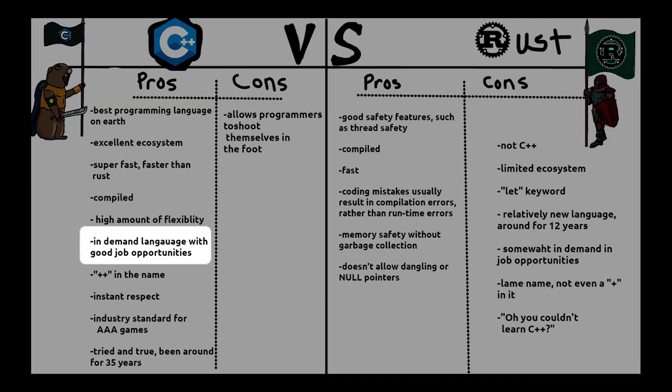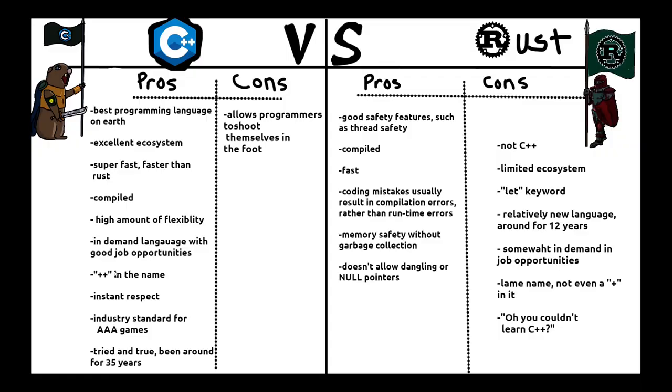A pro of Rust is it has memory safety without garbage collection. Garbage collection really slows down most languages that implement it. It ties back in with Rust not allowing dangling pointers — it has a lot of set-in-stone rules that you can't bend to your disadvantage, whereas you could do that with C++. C++ is an in-demand programming language for job opportunities; it looks really good on your resume. Rust is gaining popularity and there are more employers who want to see Rust skills, but not as extensively as C++.